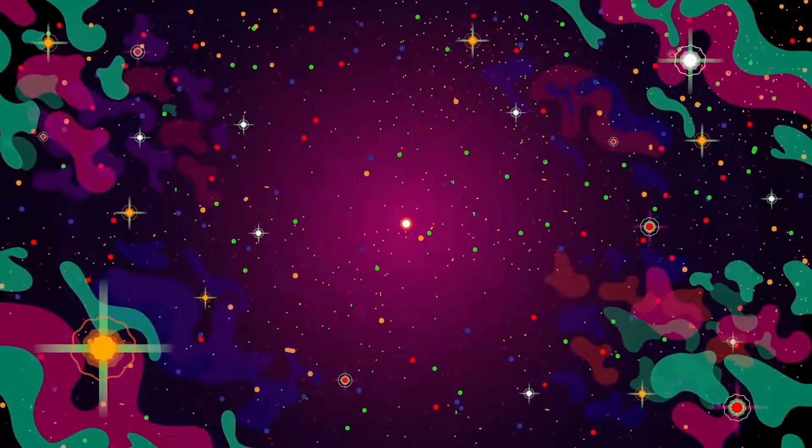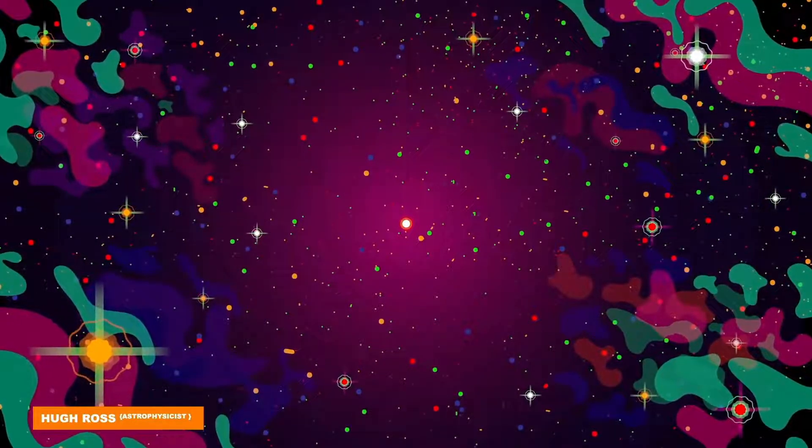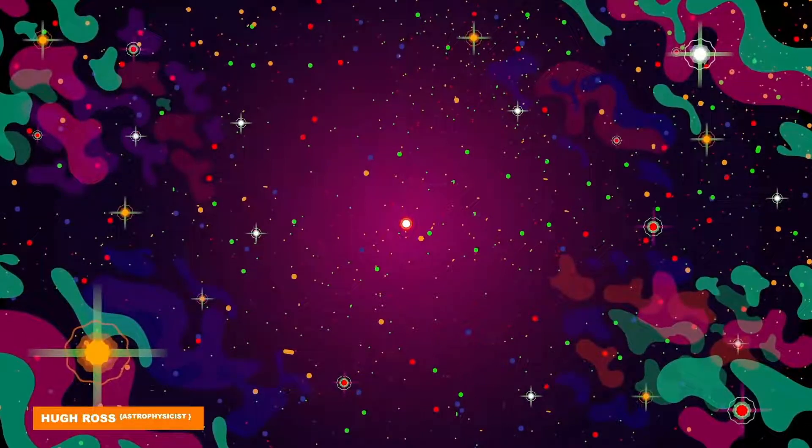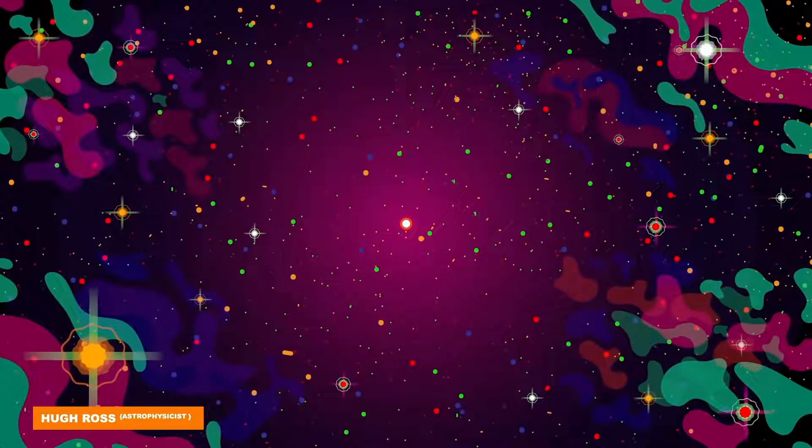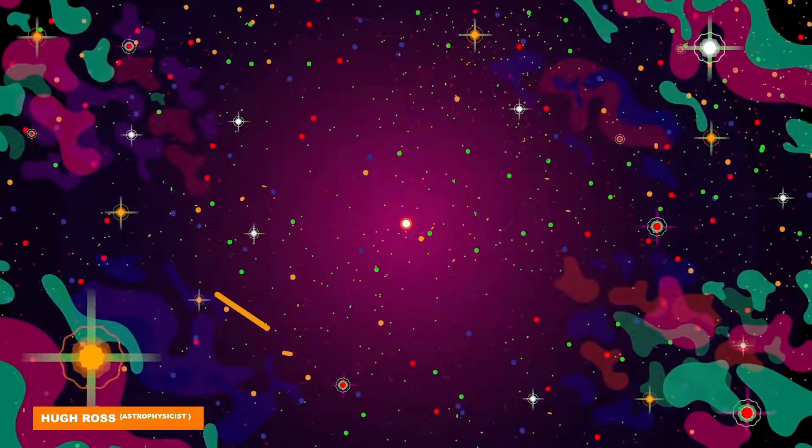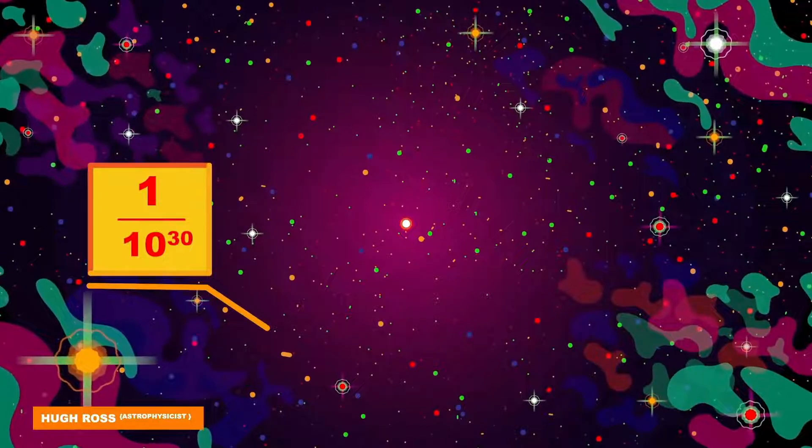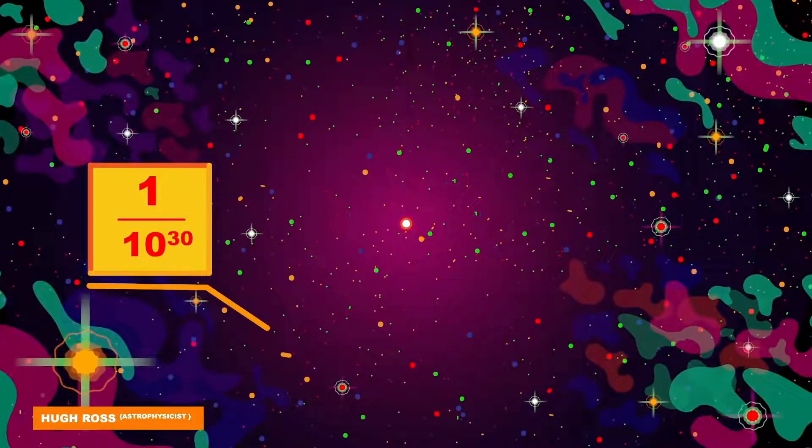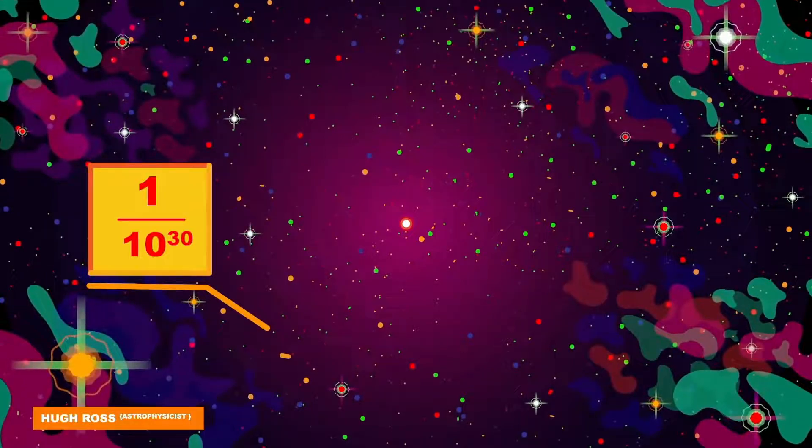So I guess it makes sense when astrophysicist Hugh Ross said that the chance of our planet existing in the universe is so rare that he calculated it to be 1 over 10 to the power 30. That's the chance that a planet like ours could form in the universe.